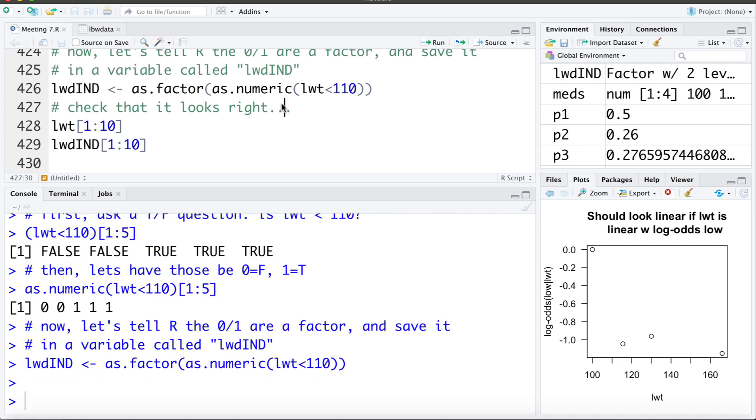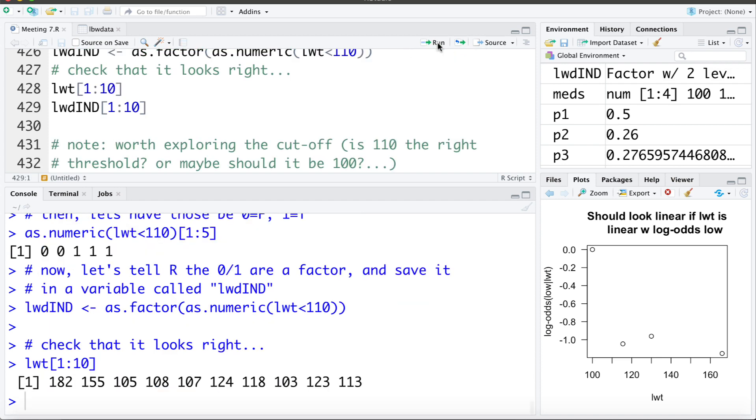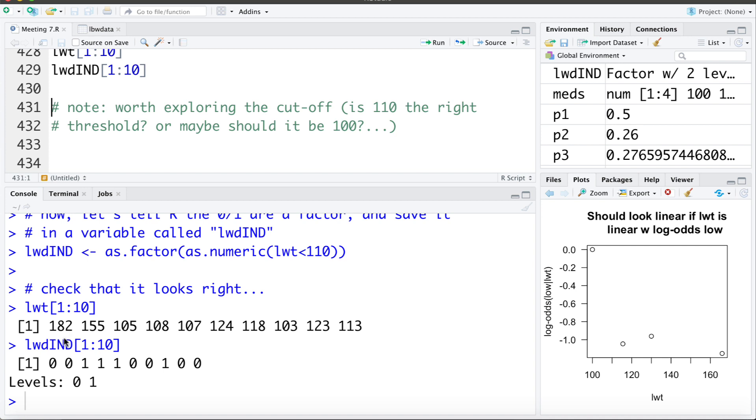And let's just check to make sure that it looks right, that it did what we thought. So I'm going to ask R, give me the weights of the first 10 people. We can see those weights there. And let's look at the value of the indicator for the first 10 people. So then we can see 182 is not less than 110. 155 is not less than 110. 105 is less than 110. 108 is less than 110. And so on. So it's always good doing this, checking to make sure that the code is doing what you think it's doing, and doing some sanity checks along the way.